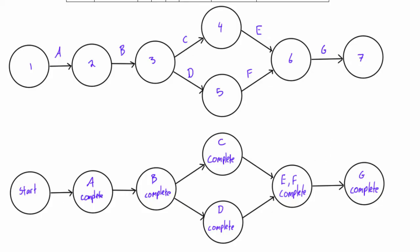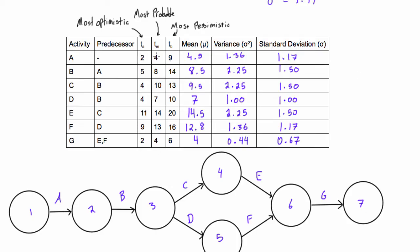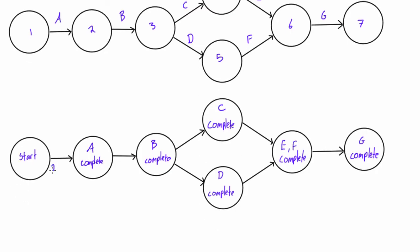So for example, for activity A, let's go back up here and check. Our most optimistic was 2, most probable was 4, and most pessimistic was 9. So we have 2, 4, 9. We will come down here and we'll just write that in: 2, 4, 9.